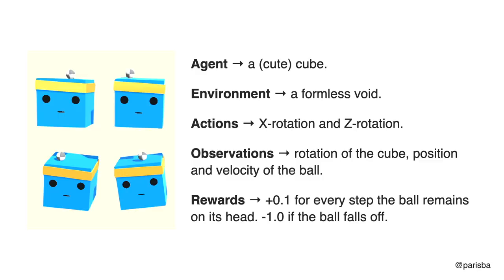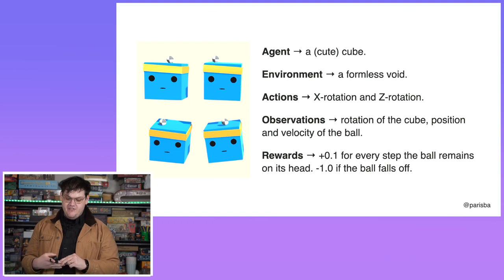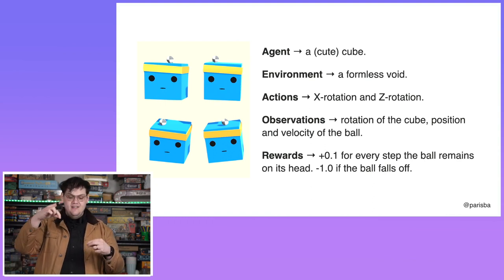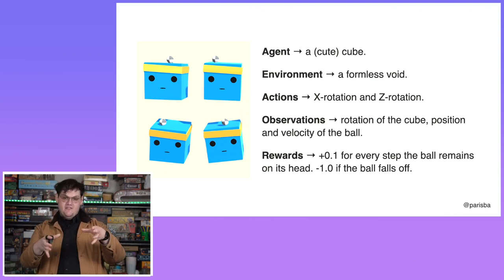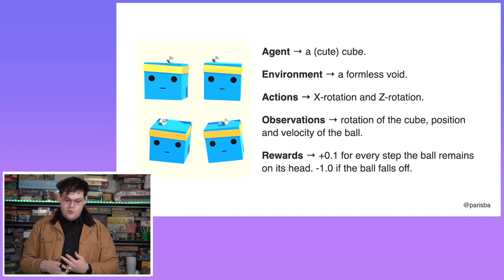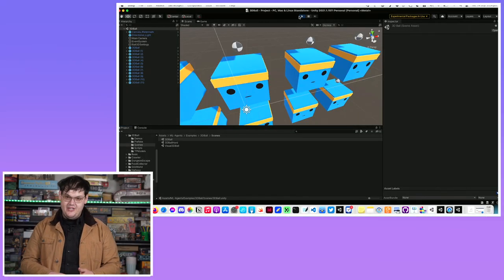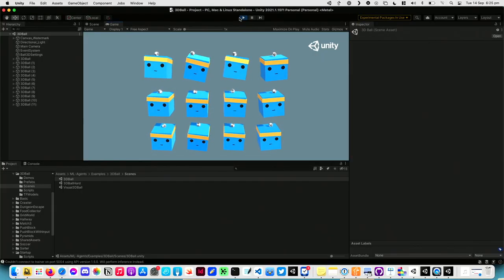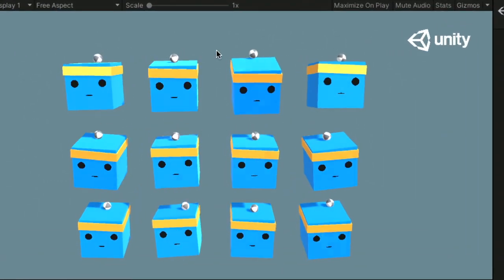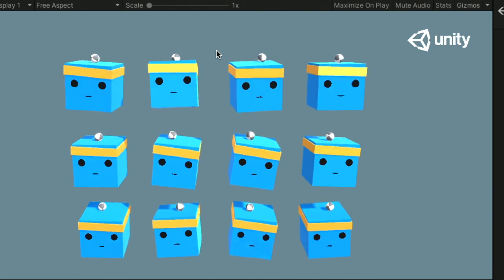There are other agents in Unity's whole package. Here's a cute little cube that exists in a formless void. Its actions are rotating itself on the X and Z axis. It knows the position of the cube and the position and velocity of the ball that sits on its head. What it's trying to learn — the policy — is to rotate itself so the ball does not fall off its head. It gets a small reward for every simulation step where the ball is still on its head, and a really large penalty if the ball falls off. Eventually, this cube learns to balance the ball on its head. Here it is running in Unity — look at him go. This cute cube does an amazing job of keeping that ball on its head.